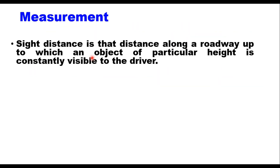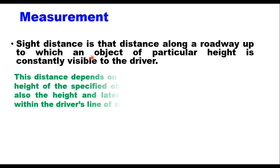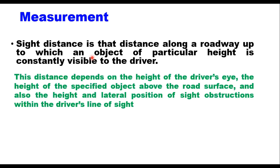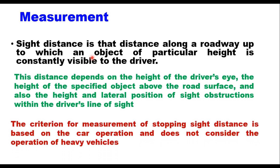How do we measure the sight distance? Sight distance is that distance along a roadway up to which an object of particular height is constantly visible to the driver. This distance depends upon the height of the driver's eye, the height of the specified object above the road surface, and also the height and lateral position of the sight obstructions within the driver's line of sight. The criteria for measurement of stopping sight distance is based on car operation.